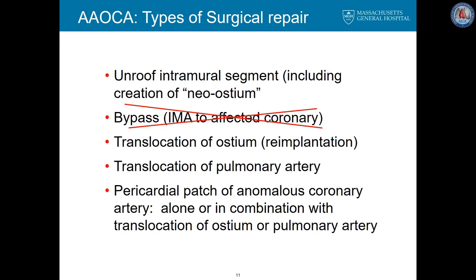The ostium and its coronary artery can be translocated and re-implanted in the correct sinus, but this is difficult to achieve when the coronaries are small or if there is a long intramural segment. Some authors believe that pulmonary artery compression is important and will translocate the main pulmonary artery to a more leftward and lateral position to relieve that compression. A different approach entails pericardial patching of the anomalous coronary artery alone or in combination with translocation of the ostium or pulmonary artery to enlarge the aorta as it begins to separate from the main aorta.